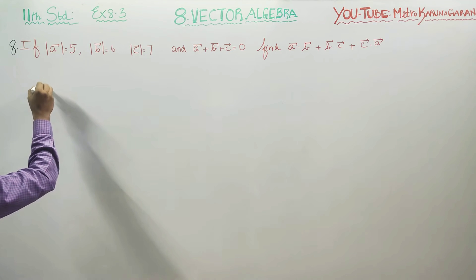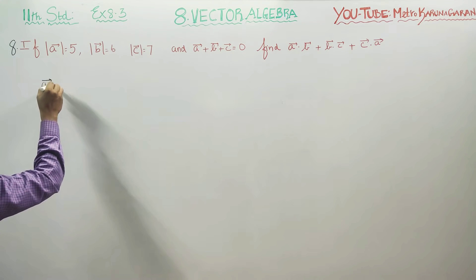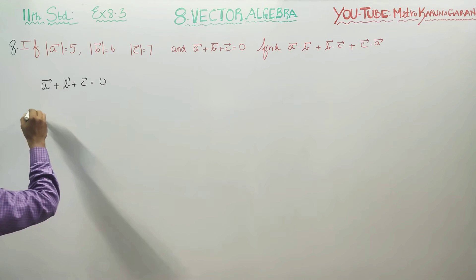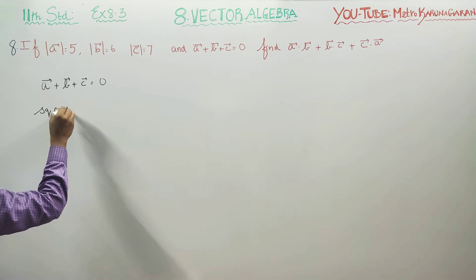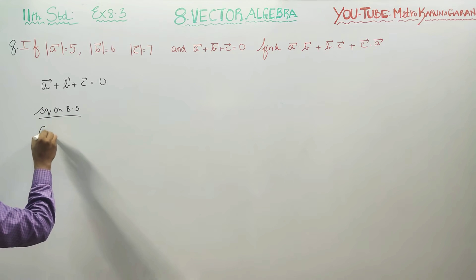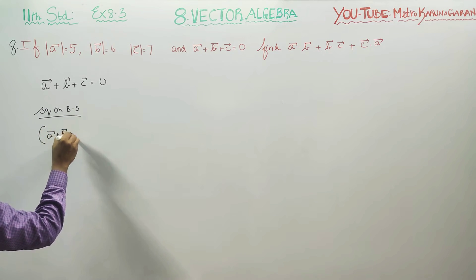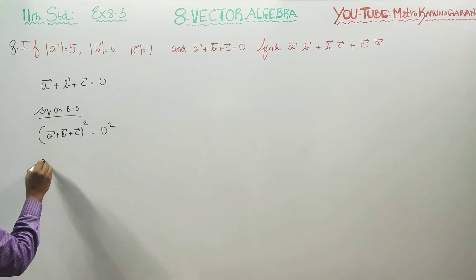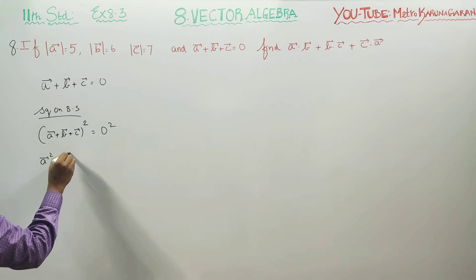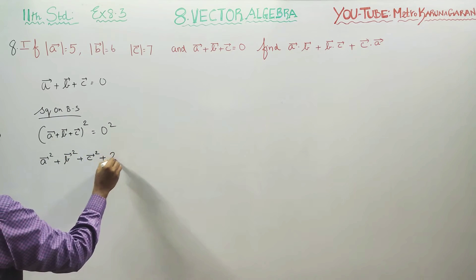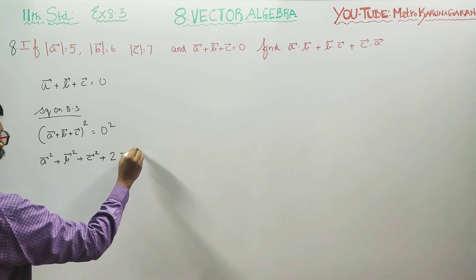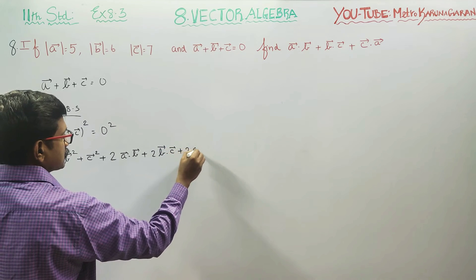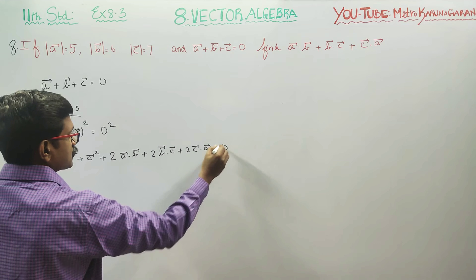I am going to start with what is given: A vector plus B vector plus C vector is equal to 0. I am going to square on both sides. Squaring on both sides, we get A vector plus B vector plus C vector whole square is equal to 0 square. What is A plus B plus C whole square? It equals A square plus B square plus C square plus 2 times A dot B plus 2 times B dot C plus 2 times C dot A. And 0 square is equal to 0.